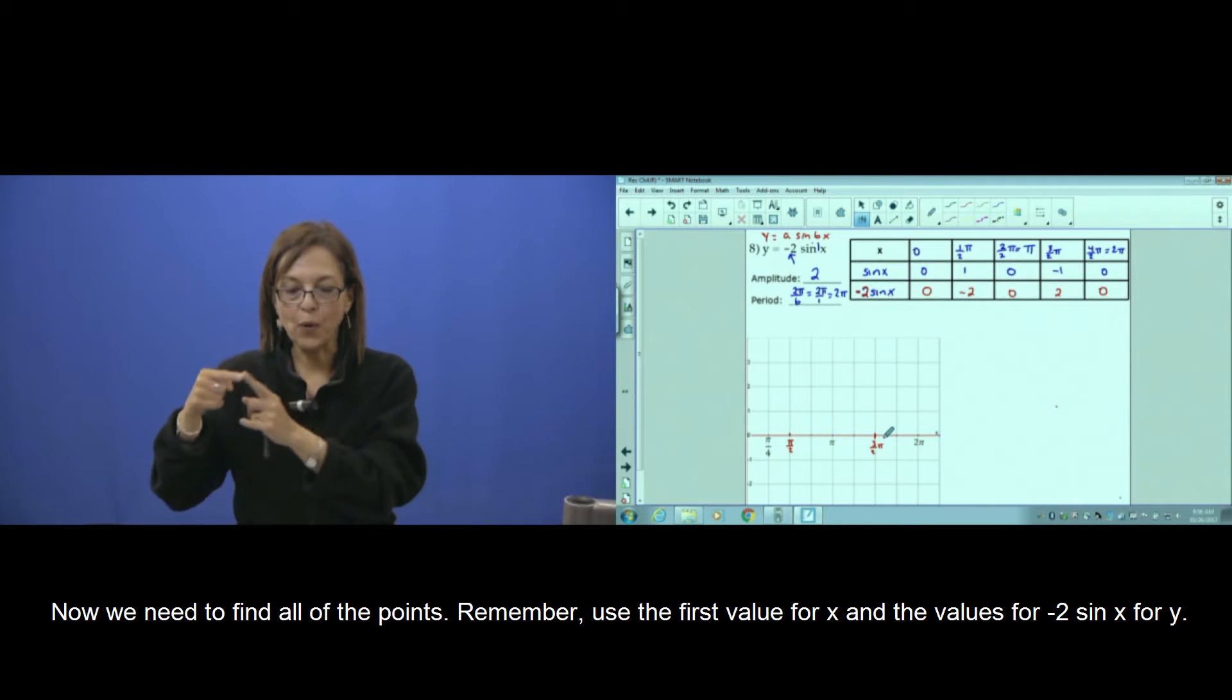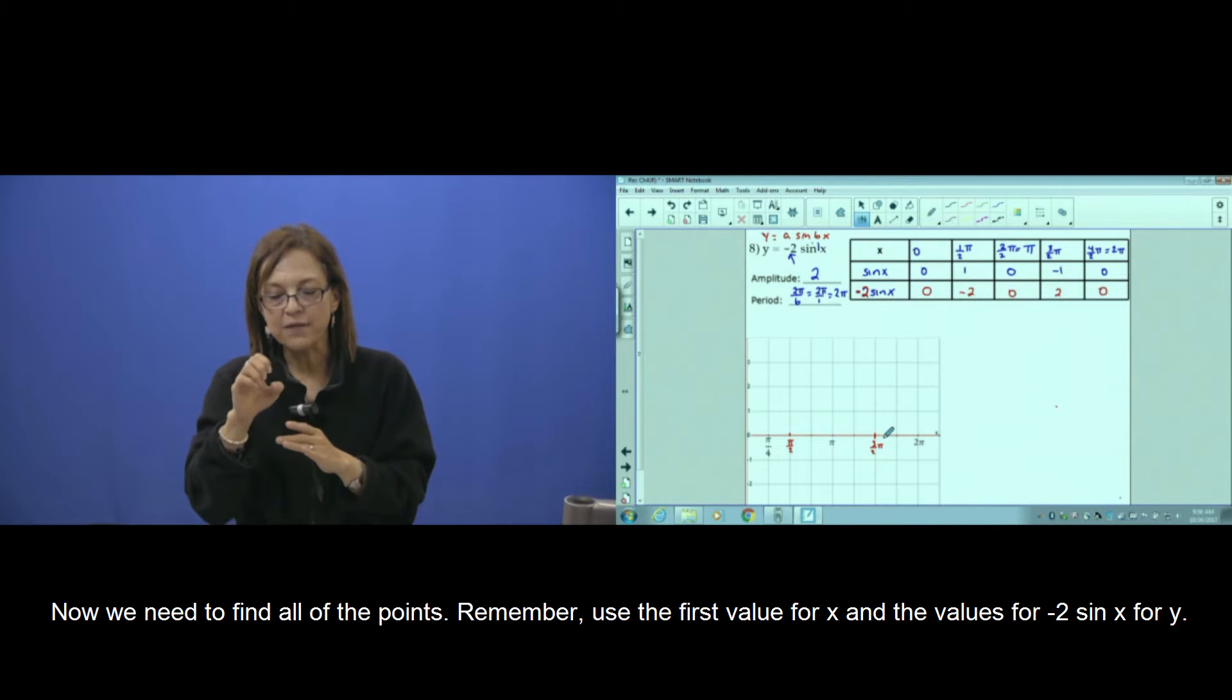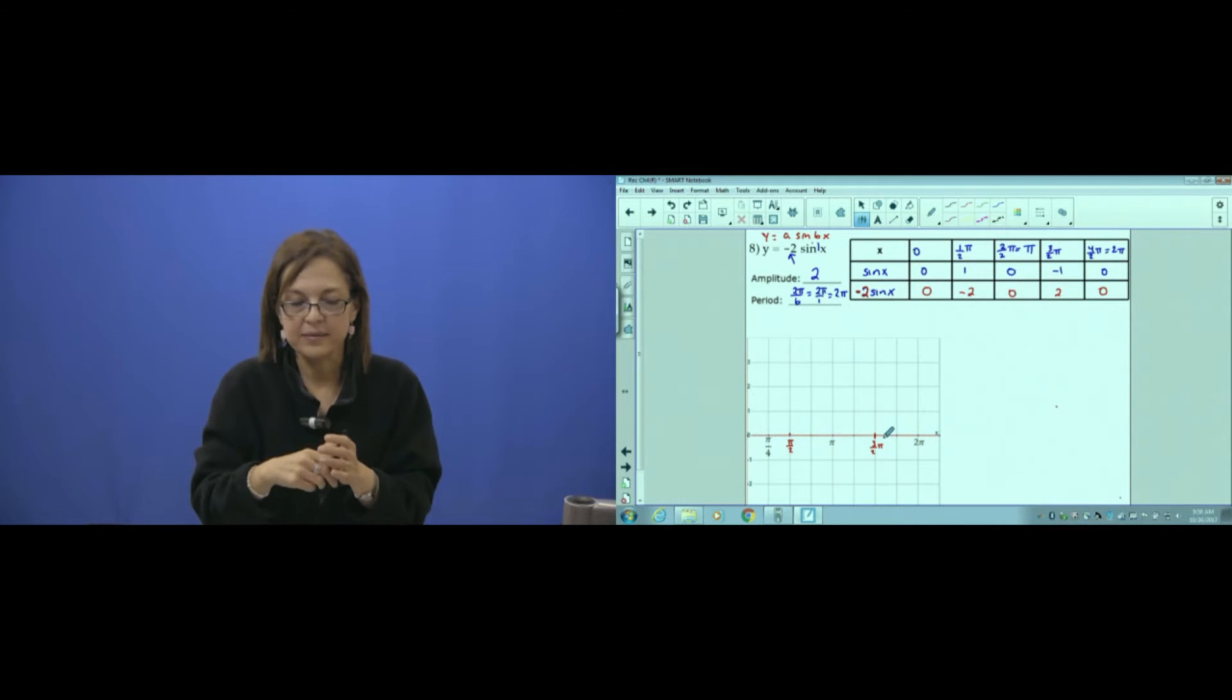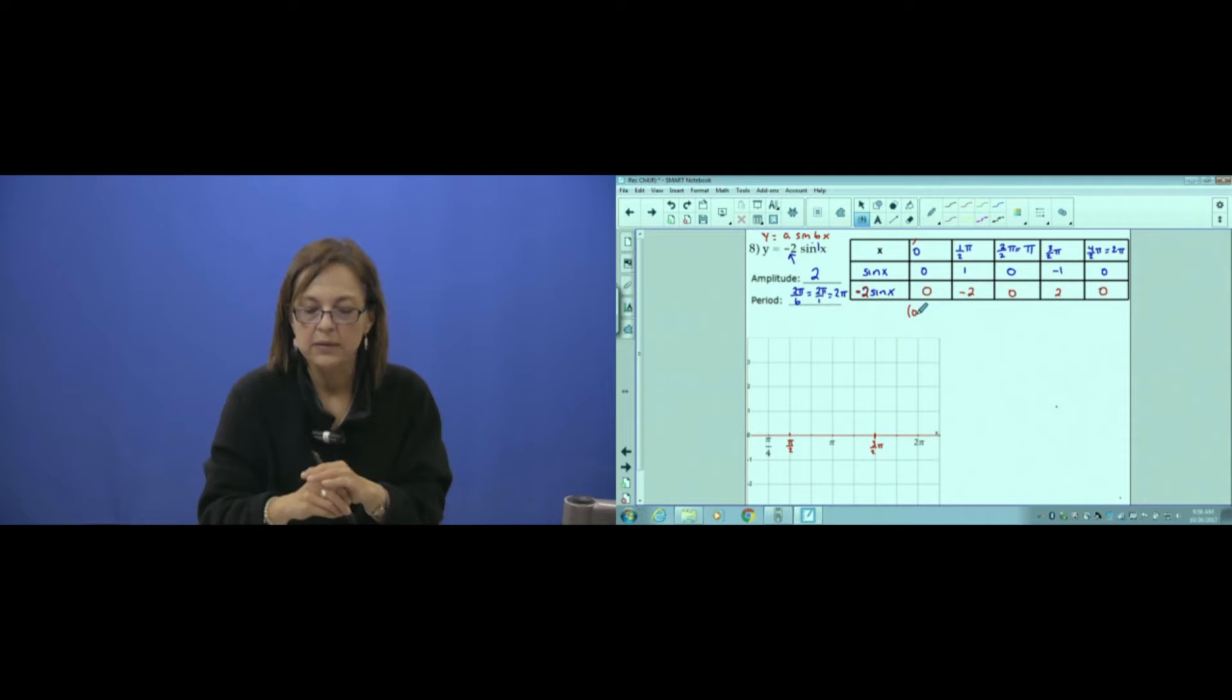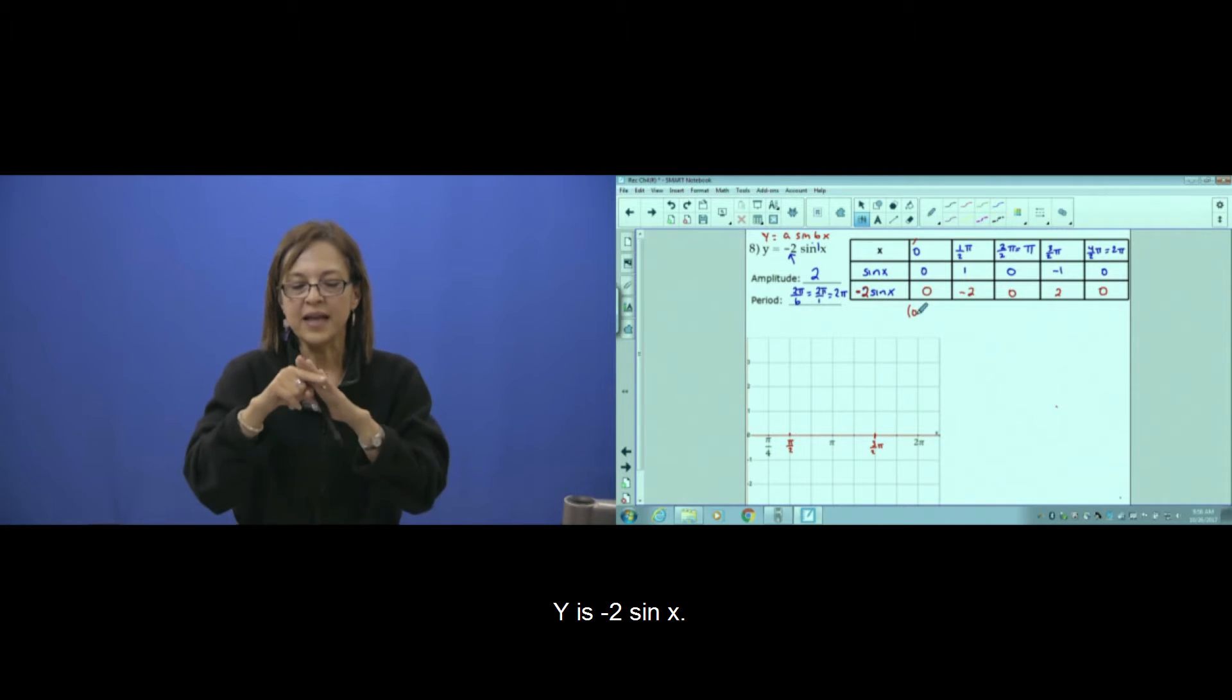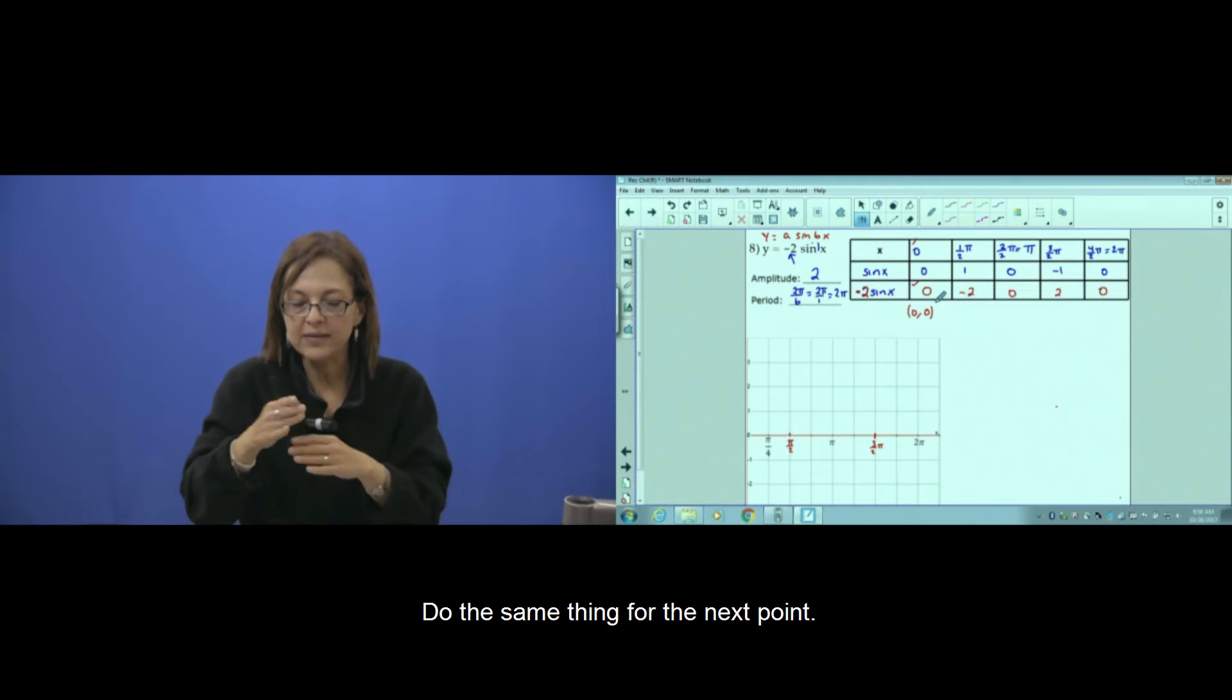Now find all the points. Remember, use first the value of x, and that is the negative 2 sine of x. Do the same for the next point.